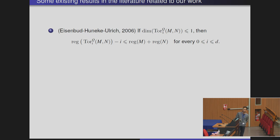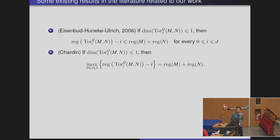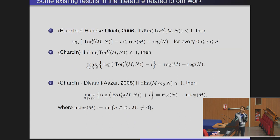The first result is due to Eisenbud, Huneke, and Ulrich. They proved that when the base ring is a polynomial ring over a field, for two finitely generated graded modules M and N, if the first Tor has dimension at most one, then the regularity of the i-th Tor minus i is bounded above by the regularity of M plus the regularity of N. In fact, under the same condition, the maximum of regularity of the i-th Tor minus i equals the regularity of M plus regularity of N. For Ext modules, when dimension of M tensor N is at most one, we have a similar result. All these results are over a polynomial ring over a field.